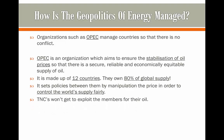TNCs, therefore, won't exploit the members for their oil, since they can actually control the price themselves. Now, what you can see is a map showing all of the countries that are part of the OPEC organisation. The main supplies of oil are mainly located in Africa, in South America — in the case of Ecuador and Venezuela — and also in Saudi Arabia and the countries in the Middle East.